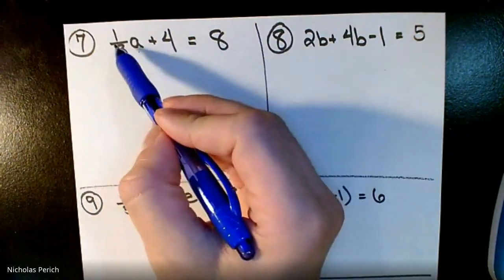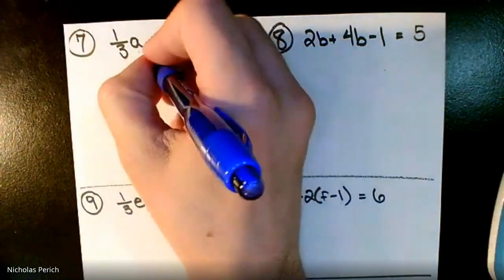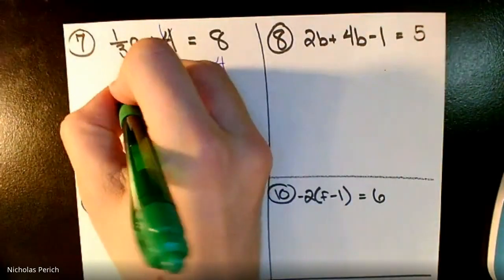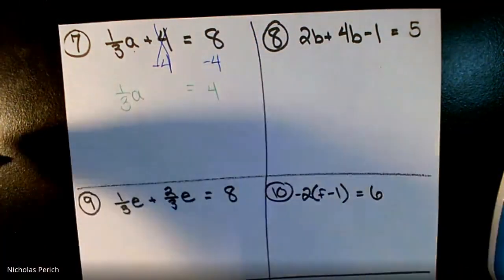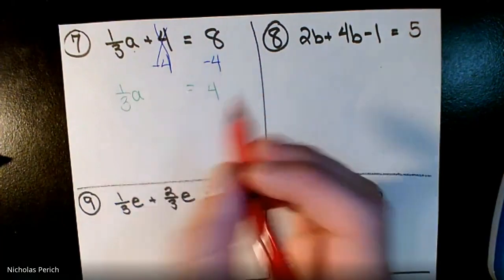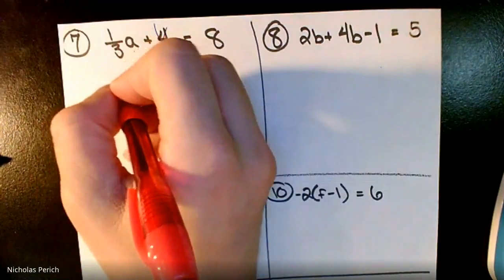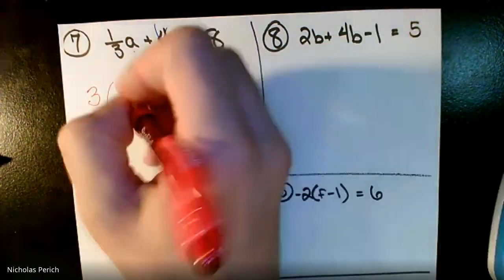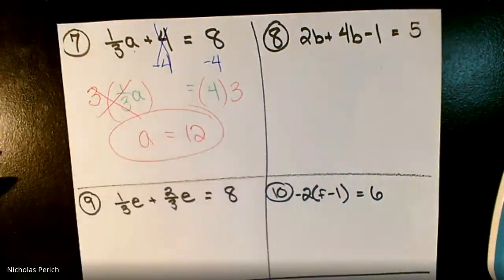Is a all by itself? No — I have one-third attached to a and a four floating around. Get rid of the plus four first: subtract four from both sides. One-third times a equals eight minus four, which is four. Now instead of dividing by one-third, multiply by the reciprocal — three over one, which is just three. Multiply both sides by three: a equals 12. Done.